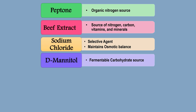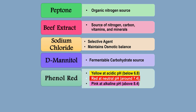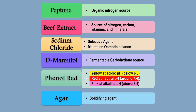The fifth ingredient in MSA agar is Phenol Red. Phenol Red is a pH indicator. It is yellow at acidic pH when the pH is below 6.8. It is red at neutral pH when the pH is around 7.4. It is pink at alkaline pH when the pH is above 8.4. The sixth and last ingredient present in the mannitol salt agar is agar. Agar acts as a solidifying agent.